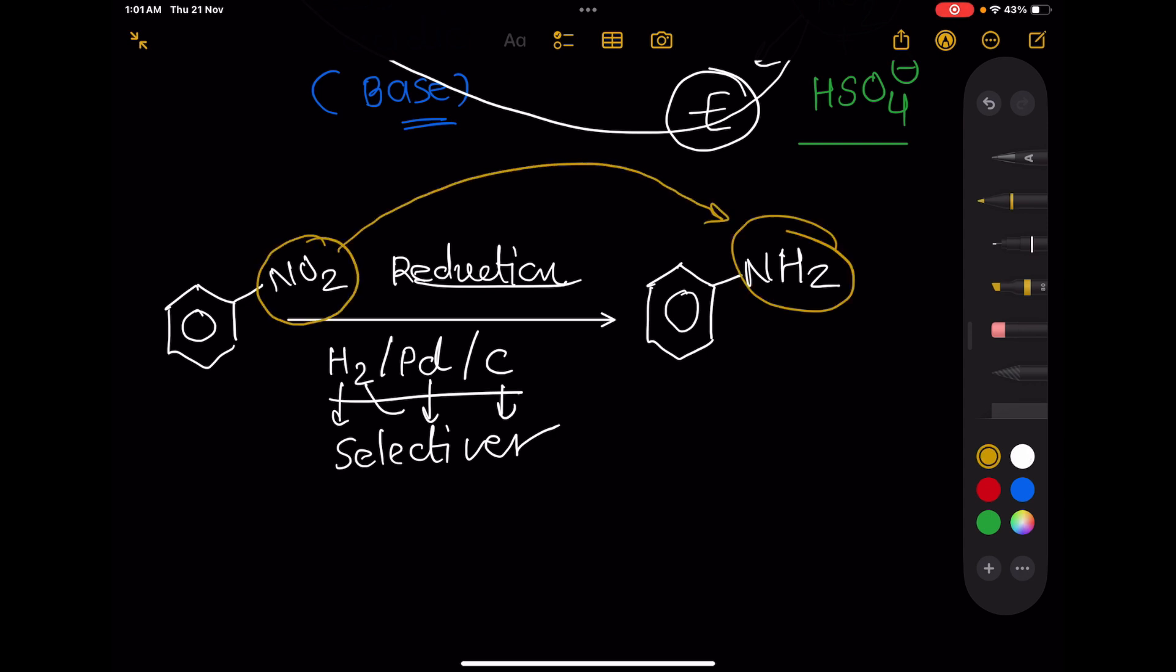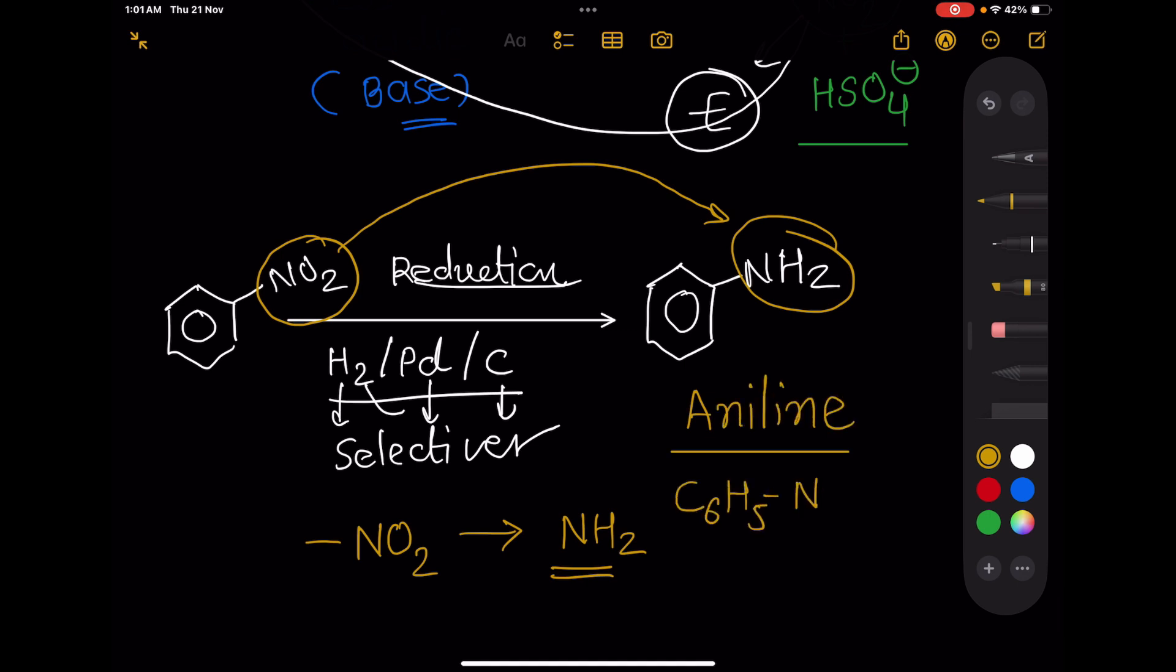The NO2 group converts into NH2 group, so the final product is aniline C6H5NH2, or we can also write Ph-NH2.